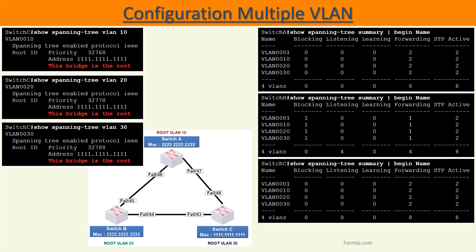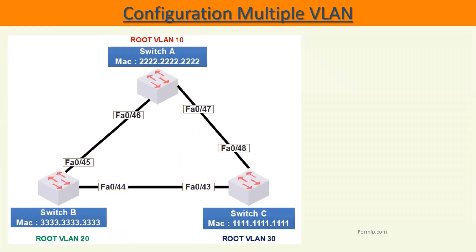Now that's not what we want. As the diagram indicates, we want each switch to be the root of a single VLAN. Currently switch C is the root bridge for VLAN 10, 20, and 30. To do this, we will lower the priority of switches A and B for VLAN 10 and 20.